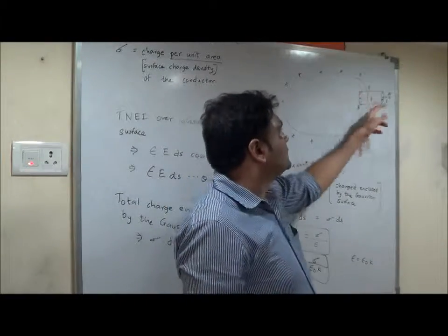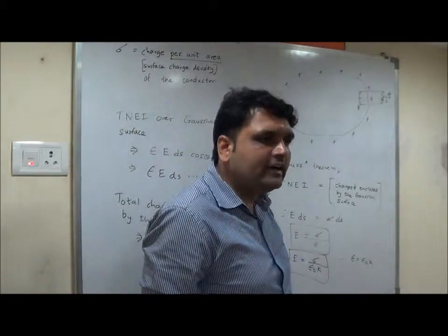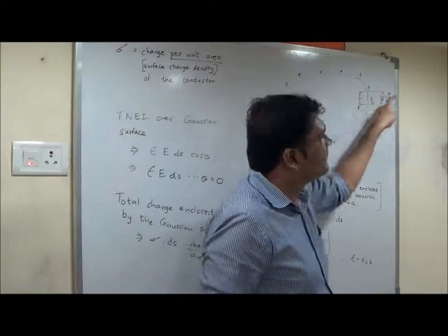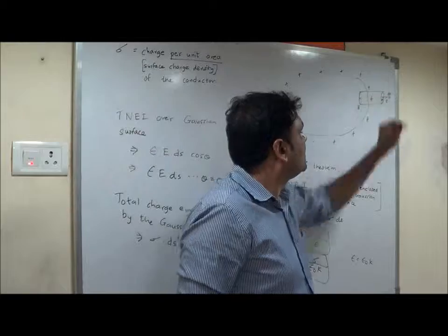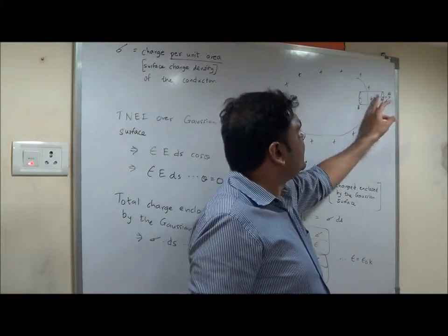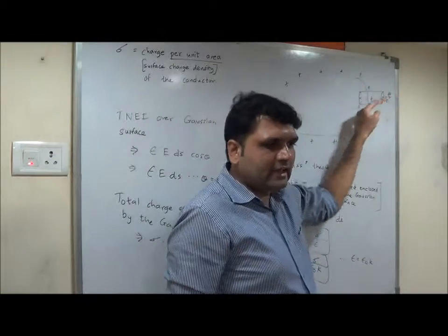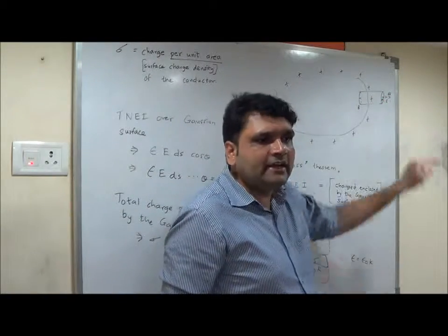So we are considering a Gaussian cylinder of surface area DS. Area vector is normal to the area, so DS bar will be somewhere around like this. If I keep a unit positive charge at A, this charged portion will repel the unit positive charge like this. So electric intensity and DS will coincide.